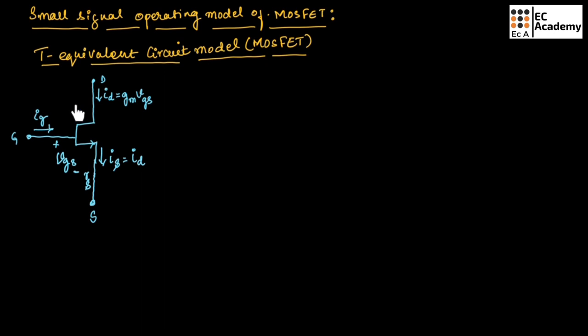To understand the T equivalent circuit for MOSFET, let's consider a MOSFET with different current components. At the drain terminal, we have the drain current ID which can be given as GMVGS.